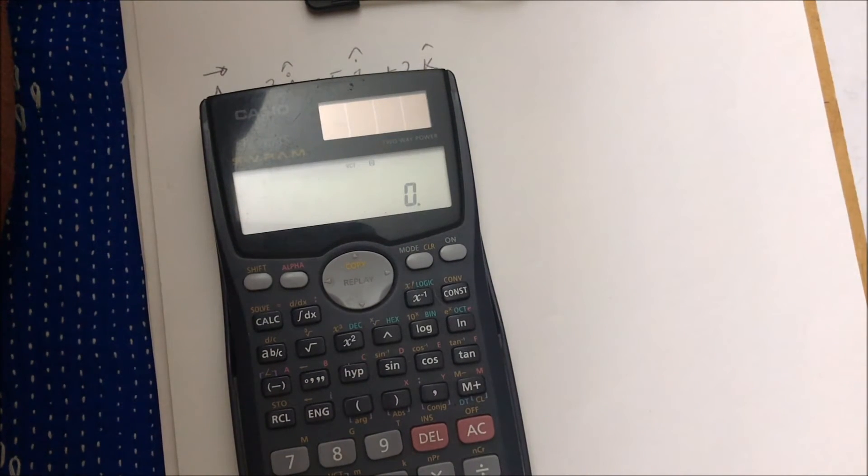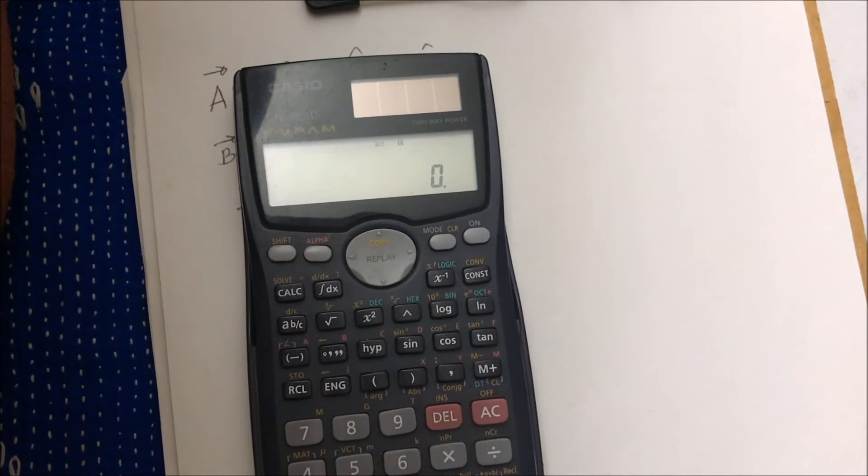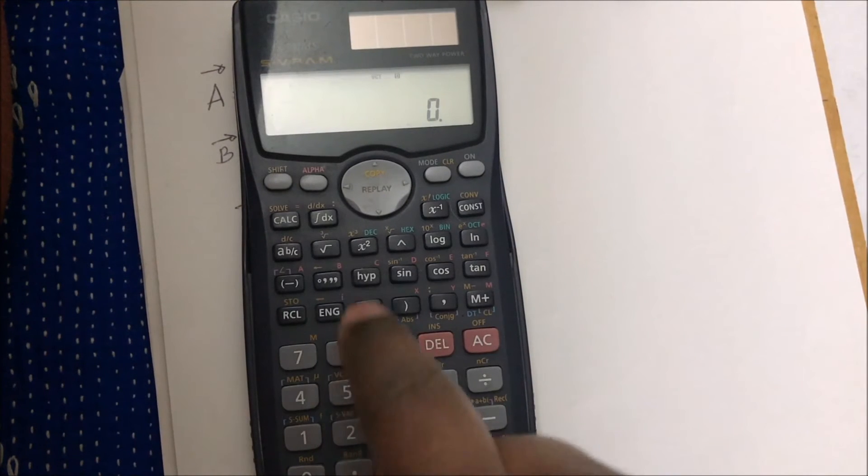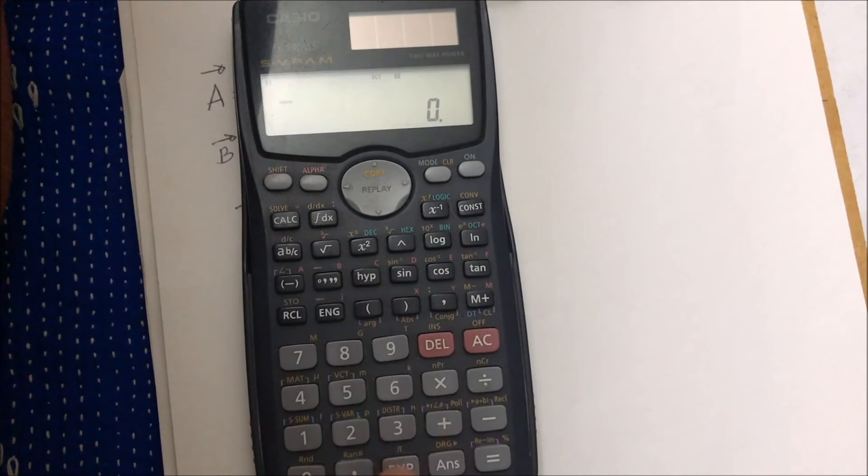Now the calculator is set for vector mode. So now we'll write those vectors. To write this vector, you have to press shift and then number five button. You see the yellow VCT - this is the place to write your vector. So first of all, you have to press one to put the dimension of the vector. Before putting the dimension, the name of your vector is A.